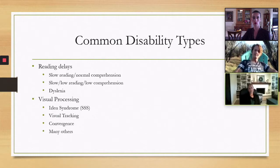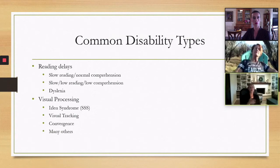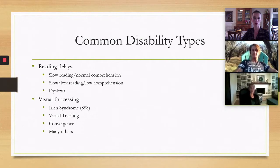Visual processing is not the same as visual acuity — you can have 20/20 vision and still have a visual processing disorder, meaning the signal that goes from your eyes to your brain has a hard time being interpreted. So a student could be reading something and it's just not being processed, even though they can actually read the words.